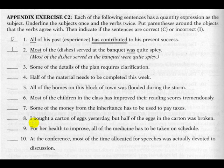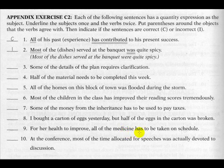Number eight: 'Half of the eggs in the carton is broken.' Half is the quantity expression, eggs is the object. Eggs is plural so the verb needs to be plural — 'is' is singular and therefore incorrect; it should be 'were broken.' Number nine: 'For her health to improve, all of the medicine has to be taken on schedule.' Medicine is the object, it is singular, and 'has' is singular — that is correct.